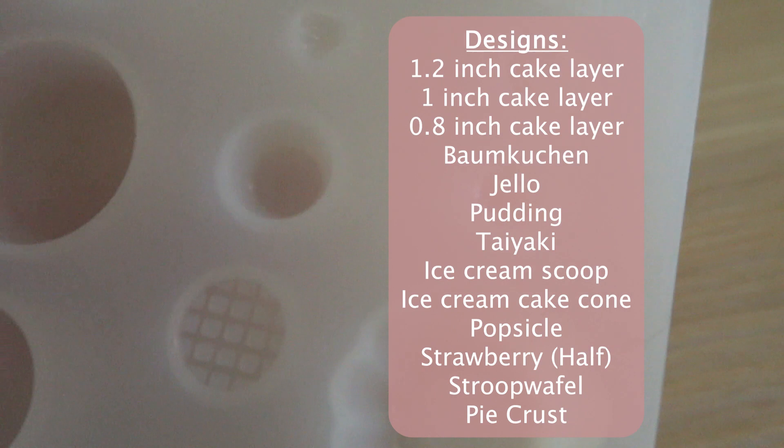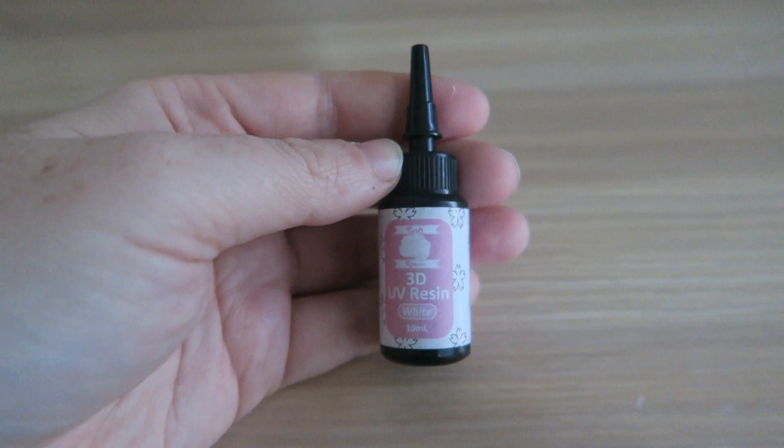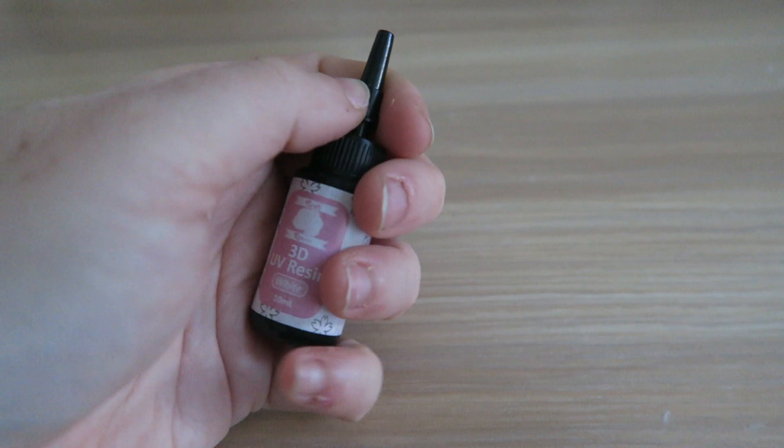There are lots of desserts and pastries on this mold and everything is a 1 to 12 scale. Next we have 3D UV resin in white and if you've never used 3D UV resin you'll see how it works later in the tutorial.